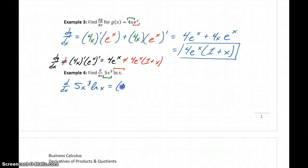So in this case, our derivative becomes the derivative of 5x³ times the natural log of x plus 5x³ times the derivative of the natural log of x.